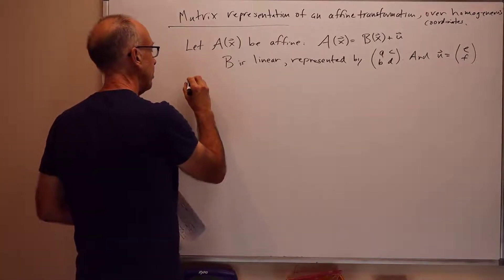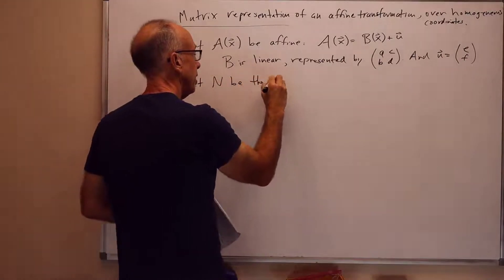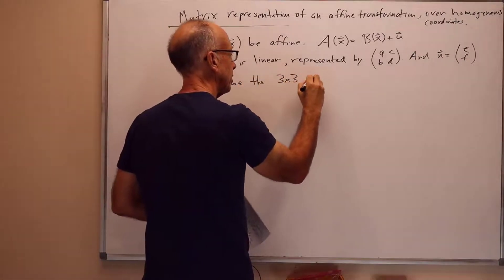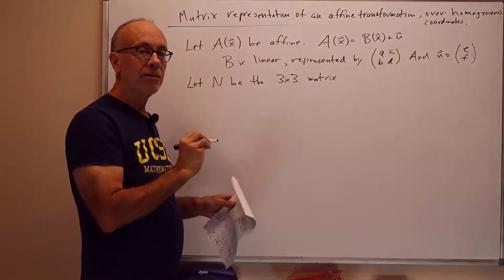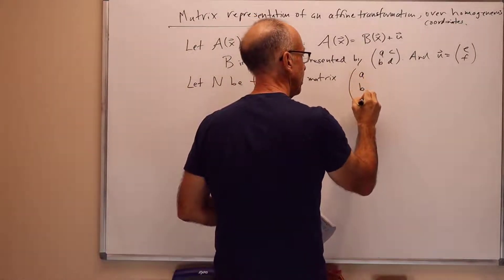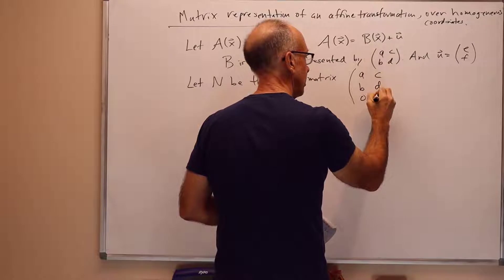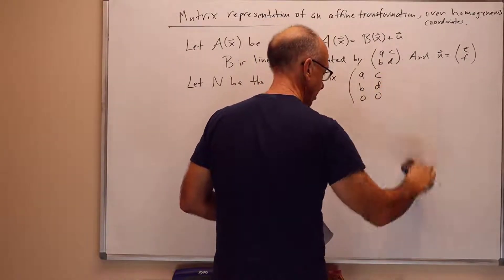So, now we're going to pick a 3 by 3 matrix. Let N be the 3 by 3 matrix. So, we're using a 3 by 3 matrix to represent an affine transformation in R2. And the entries in the matrix are A, B, 0, C, D, 0, E, F, 1.